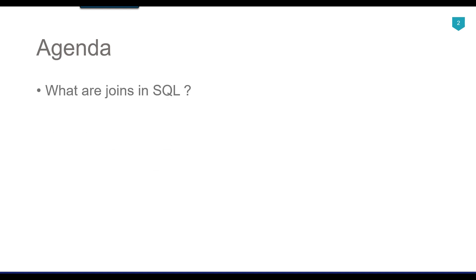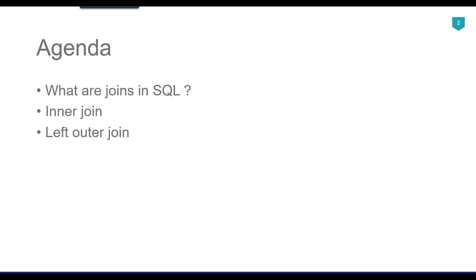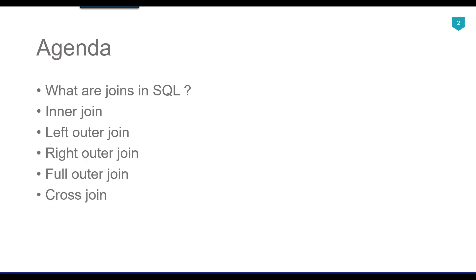The agenda of today's video tutorial is: what are the joins in SQL Server? When you are working in a normalized environment, the majority of the time whatever information you need might be stored in multiple tables. Joins are used to join two or more tables together based on the common columns. We have different types of joins: inner join, left outer join, right outer join, full outer join, and cross join.